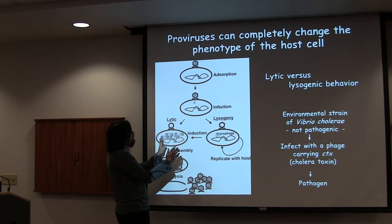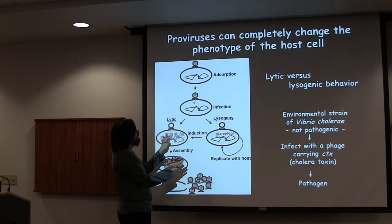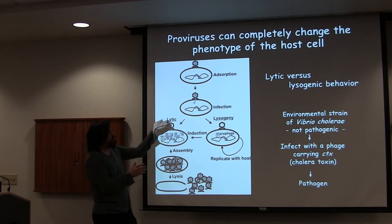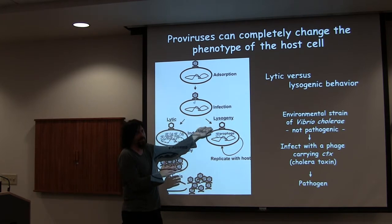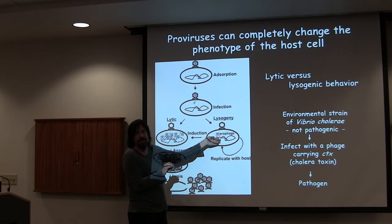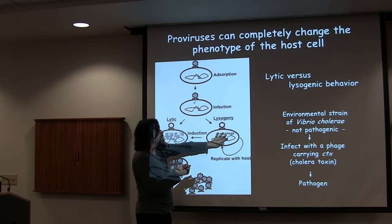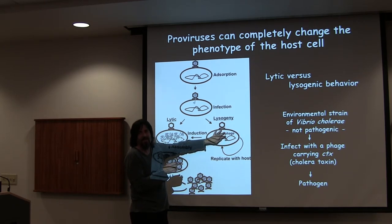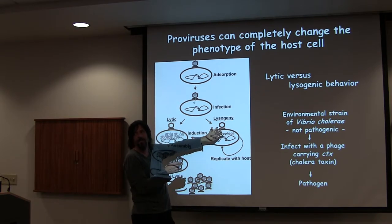The two life cycles get a little complicated. You've got the lytic one, which is when the phage just makes a whole bunch of itself and blows up the host. And then you've got the temperate life cycle, where you form a lysogen. The host with a provirus in it is called the lysogen. Some people prefer to talk about temperate lifestyles rather than lysogenic.